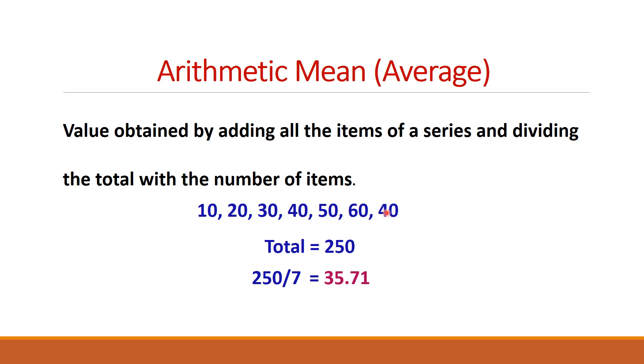So, this 250 has to be divided by 7, which gives us 35.71. So, this 35.71 is the average of this group, or it is the arithmetic mean of all the values in the group. This 35.71 gives us an idea about this group.